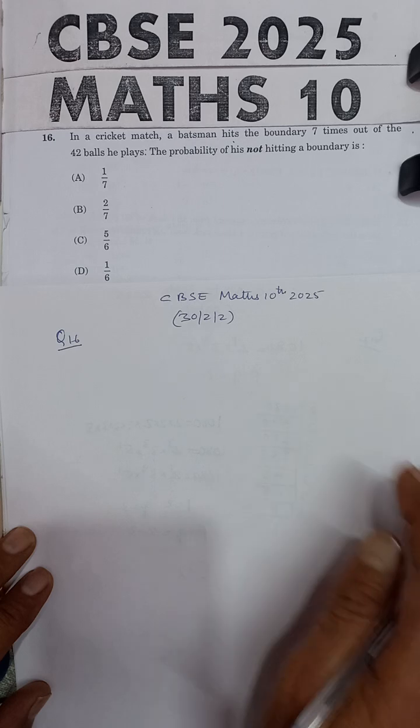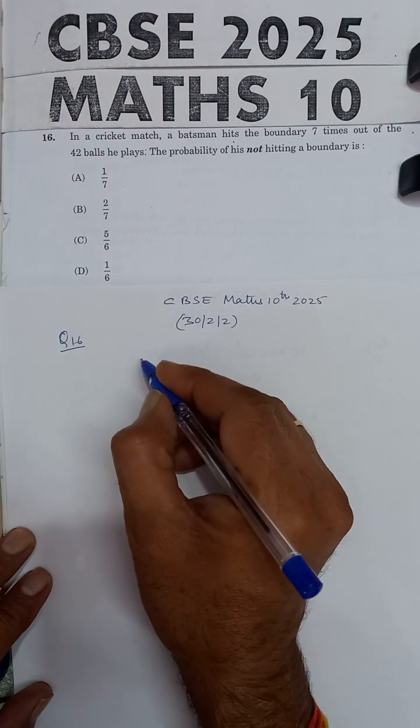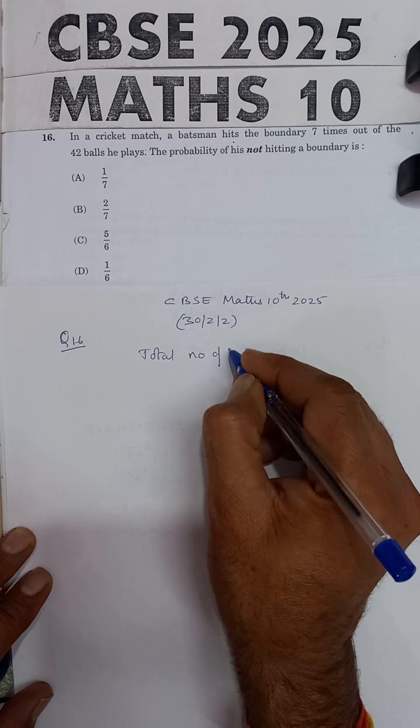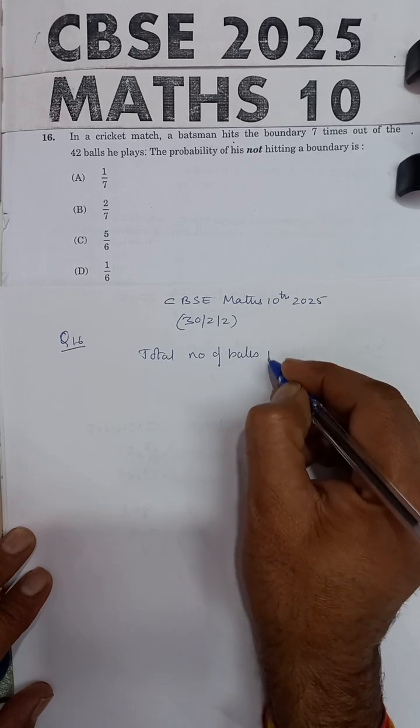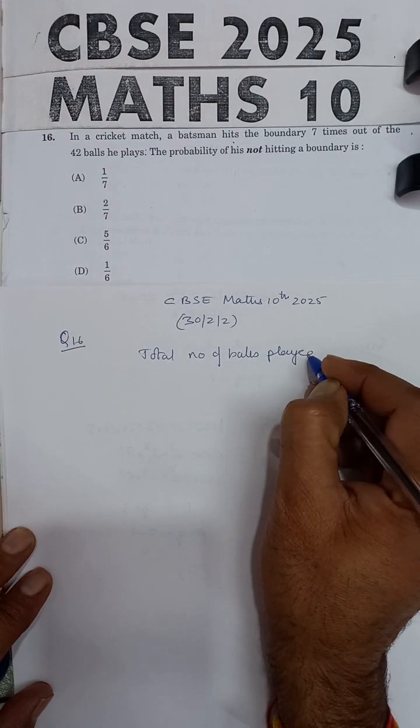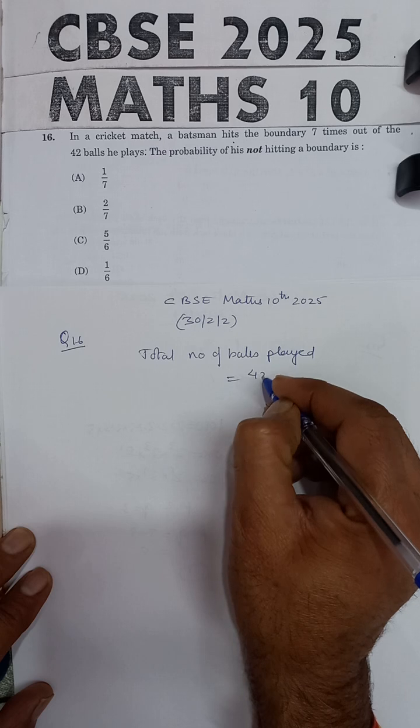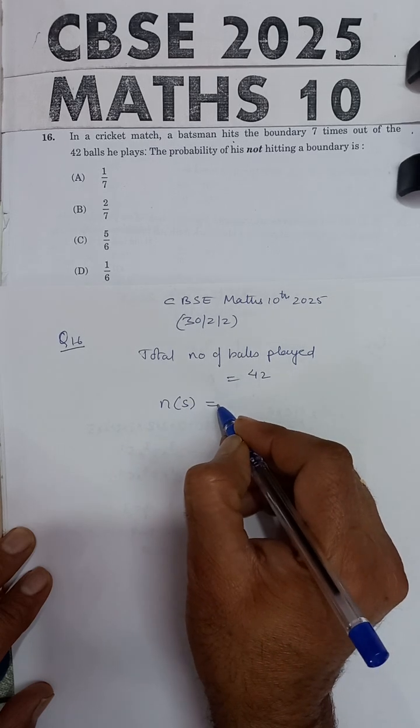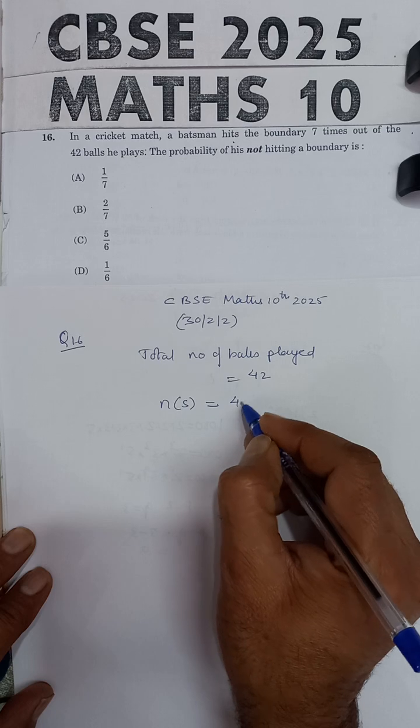In this question, we need to find that total number of balls played is 42. So this is the number of elements in the sample space. So N(S) is 42.